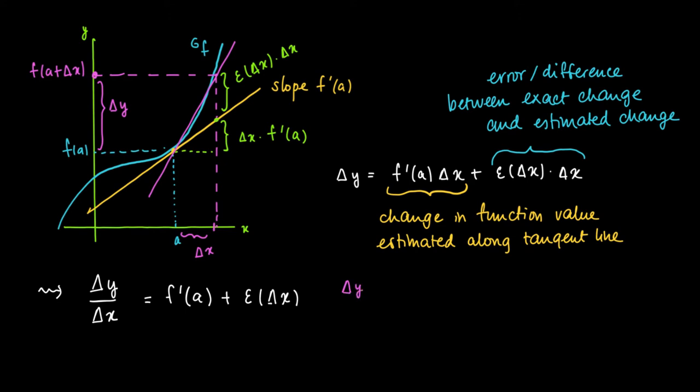Now consider this term delta y divided by delta x. This is just the slope of the purple line segment, which is the line through the points (a, f(a)) and (a plus delta x, f(a plus delta x)).